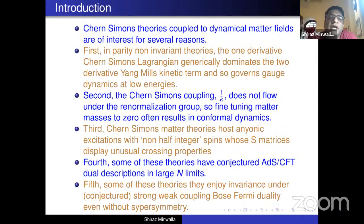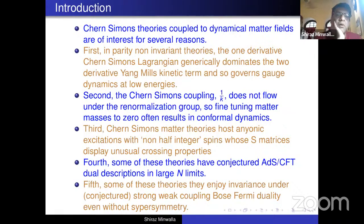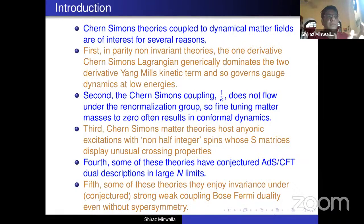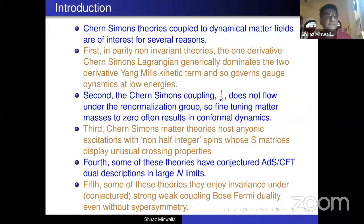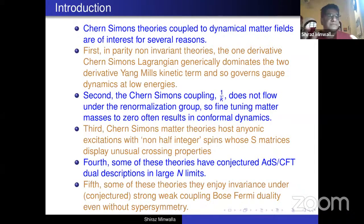As all of you know, Chern-Simons coupled to dynamical matter fields are of interest for several reasons. I'm going to list some of them as motivation for this talk. First, in parity non-invariant theories, the one-derivative Chern-Simons theory is the most relevant term made out of purely gauge fields that you can add to your Lagrangian. So just this observation tells you that if you've got a parity non-invariant gauge theory in 2+1 dimensions, you should expect its low energy dynamics to be governed by the Chern-Simons term, and perhaps a Chern-Simons term coupled to matter.